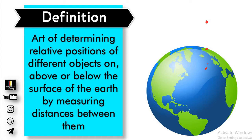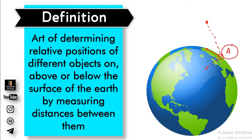Positions are determined by measuring distances between them. For example, let's say there is a reference point A. We can determine where another point lying on the surface of the earth is — how much distant it is from point A. A point above the surface of the earth can be determined by leveling, by horizontal measurement, and by angular measurement. Similarly, a point below the surface of the earth can also be exactly located with respect to reference point A.